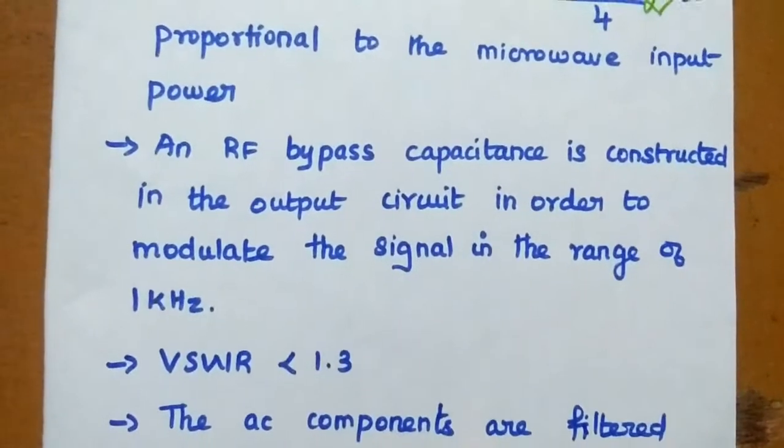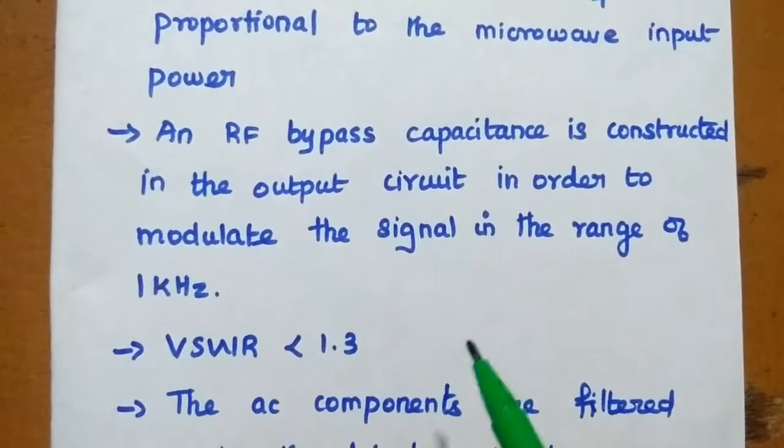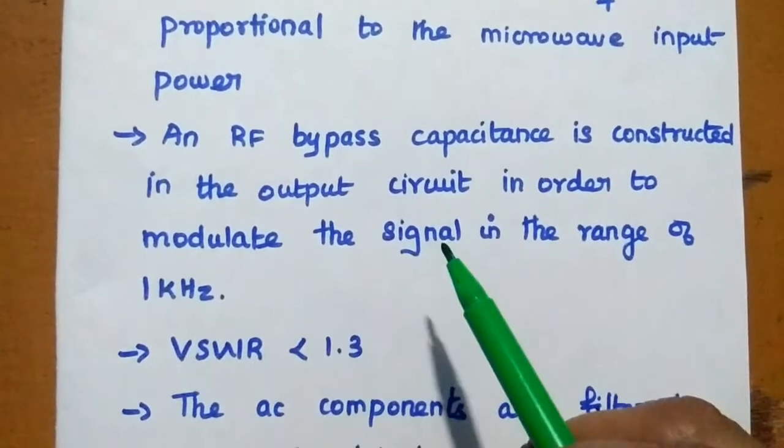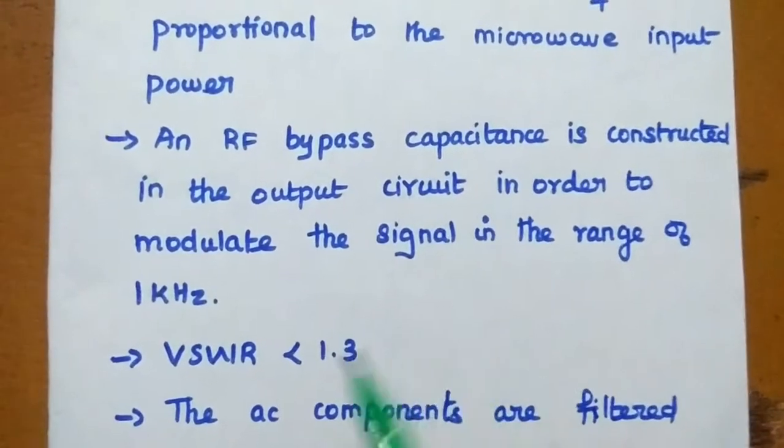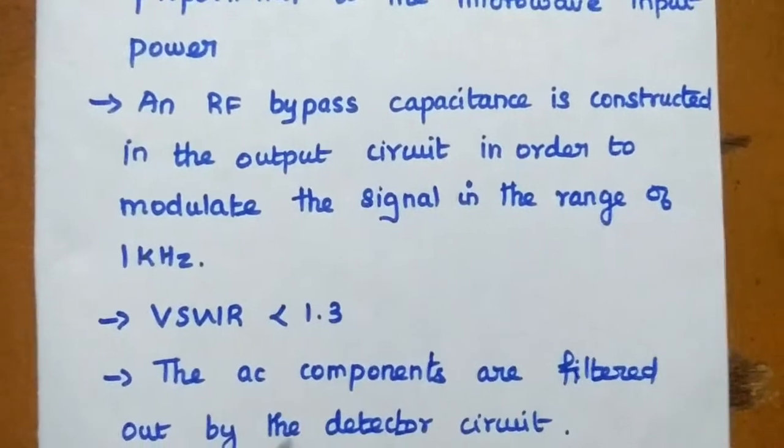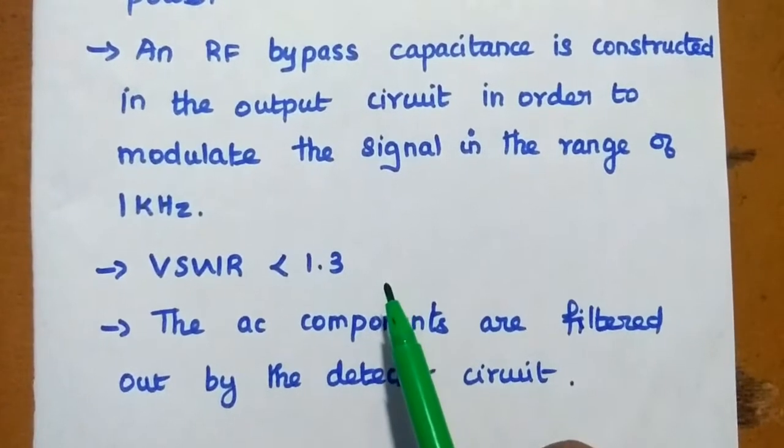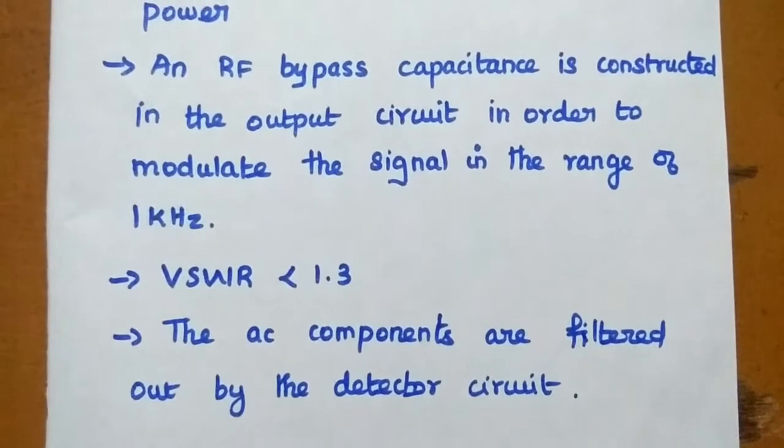The RF bypass capacitance is used to convert or modulate the signal, that is microwave signal in the range of 1 kilohertz. This is mainly used in the laboratory purpose. Next, VSWR should be less than 1.3 range. The AC components are filtered out by the detector circuit.